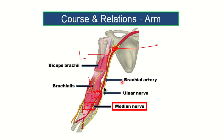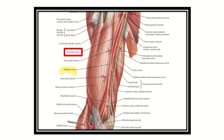So the course of the median nerve is first lateral, then anterior, then medial — LAM. This is the normal course of the median nerve relating to the brachial artery. Here is another picture, and we can see the brachial artery and the median nerve again.